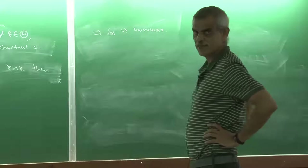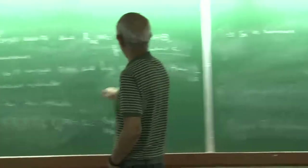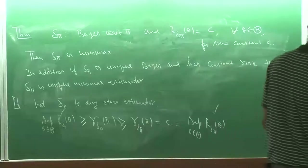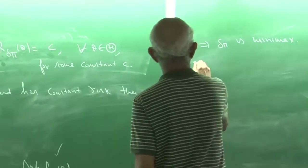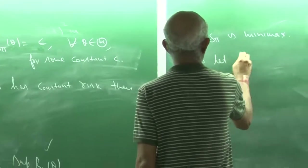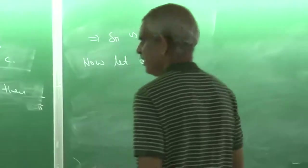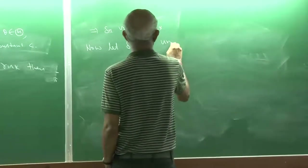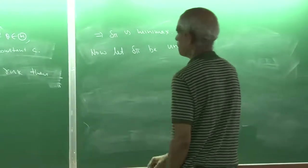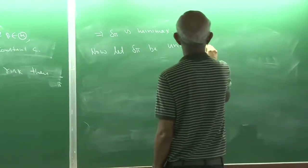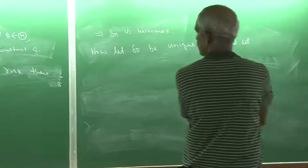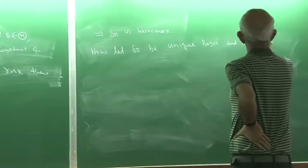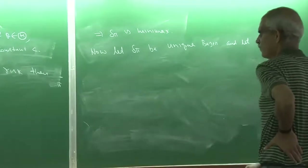Now, for the unique Minimax part: if delta_pi was the unique Bayes estimator, what happens? Let delta_pi be unique Bayes, and let delta_1 be any other estimator.